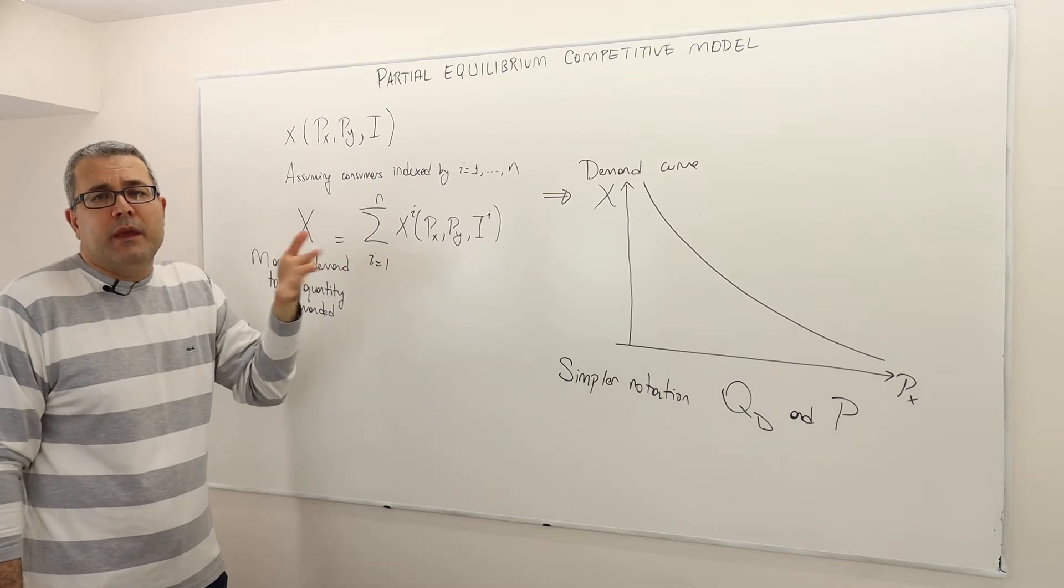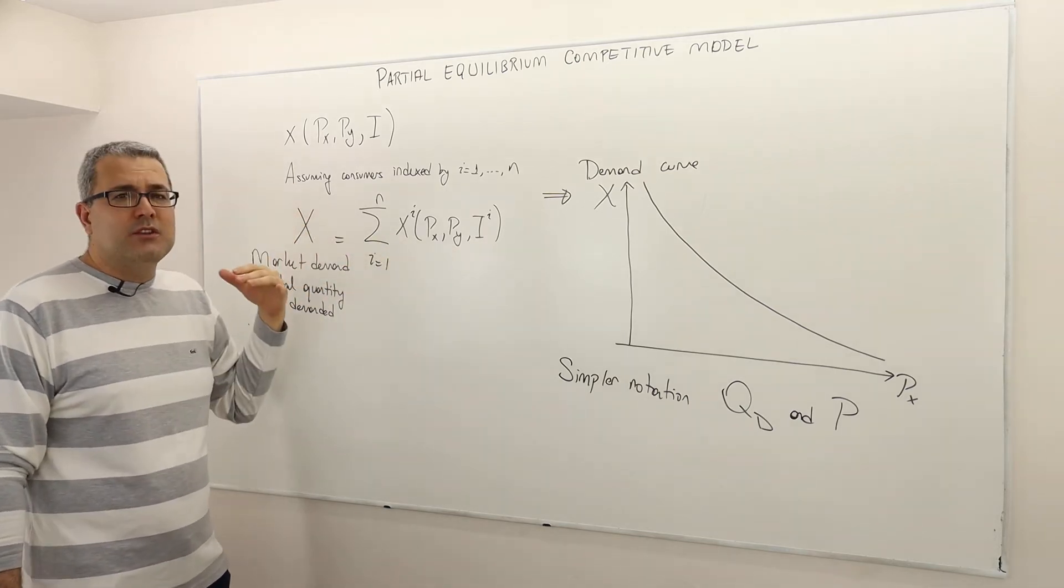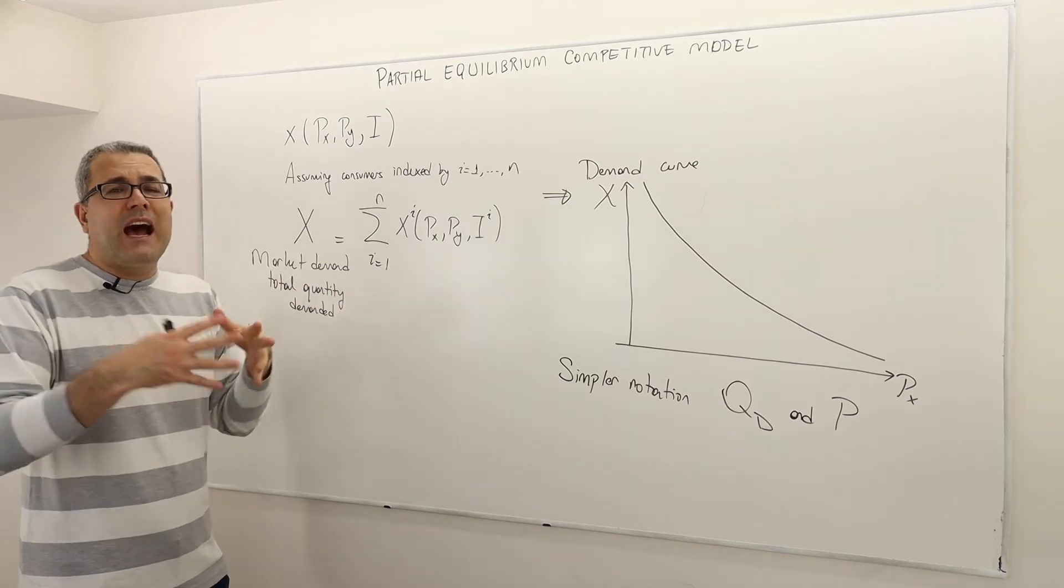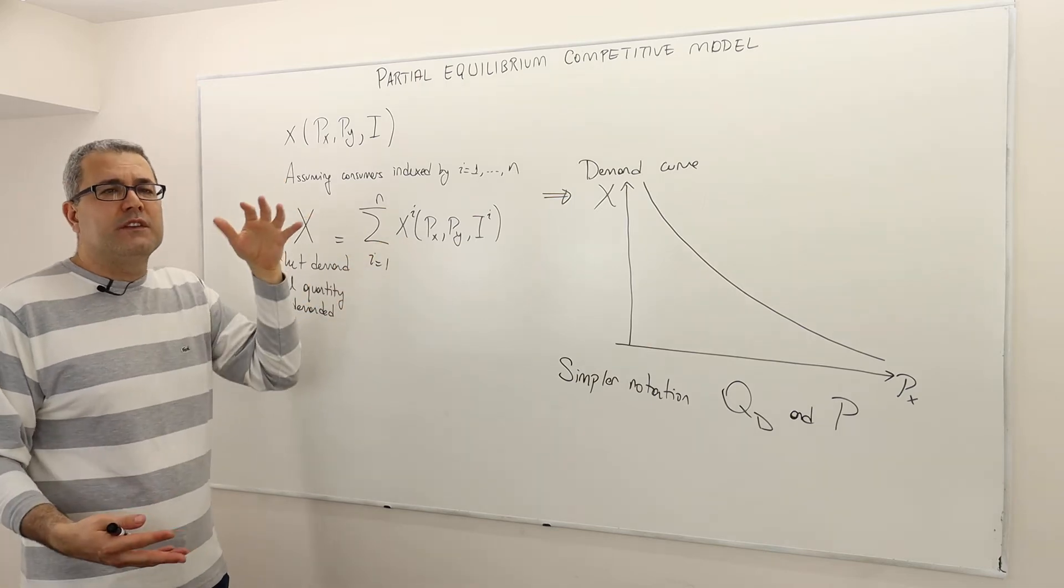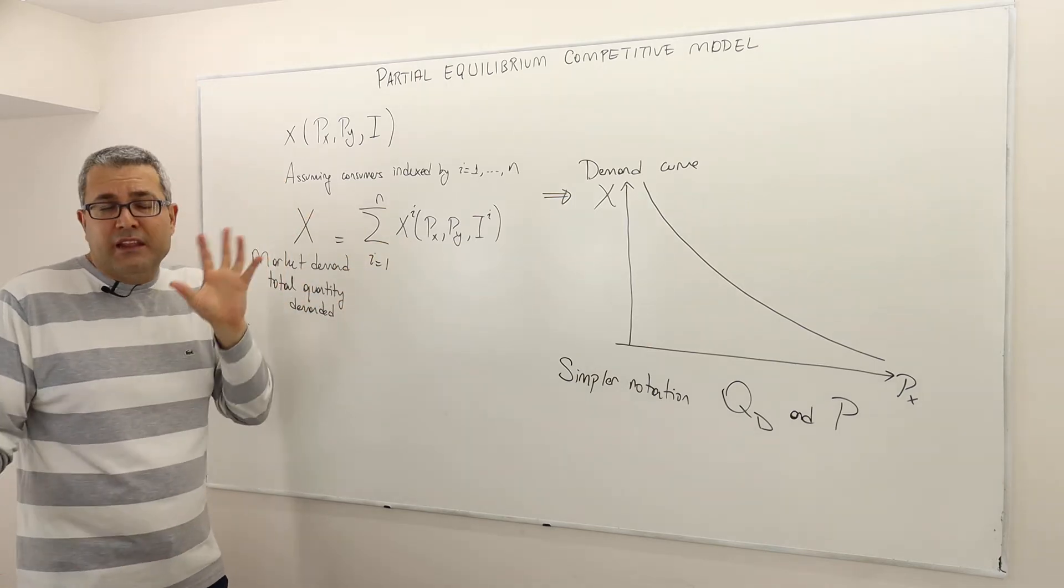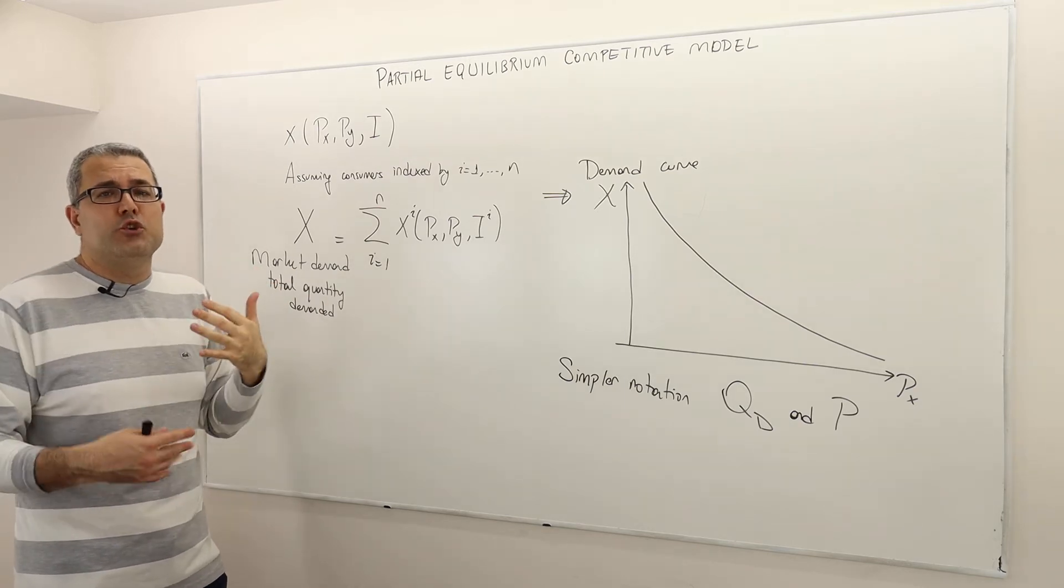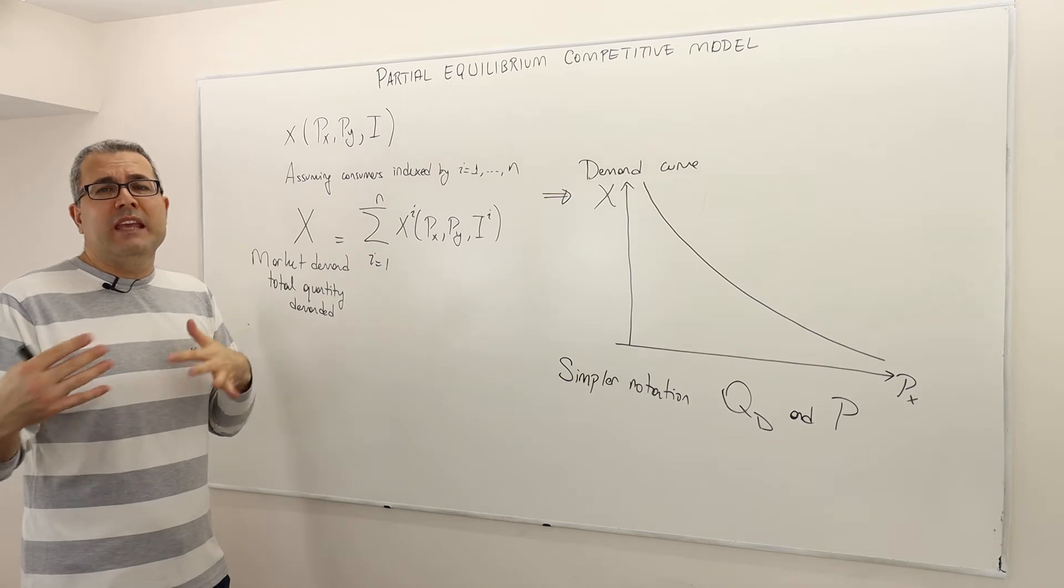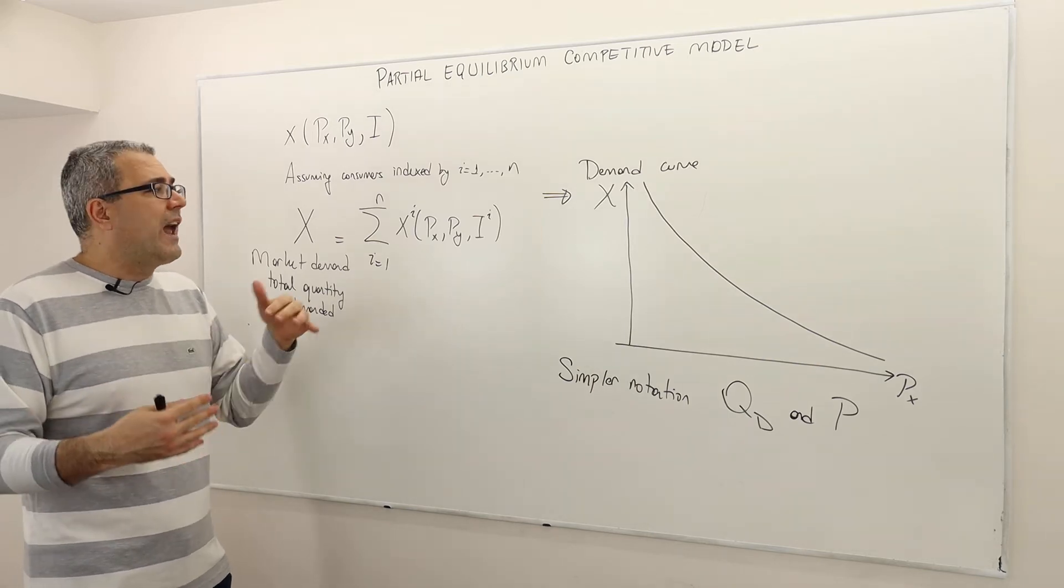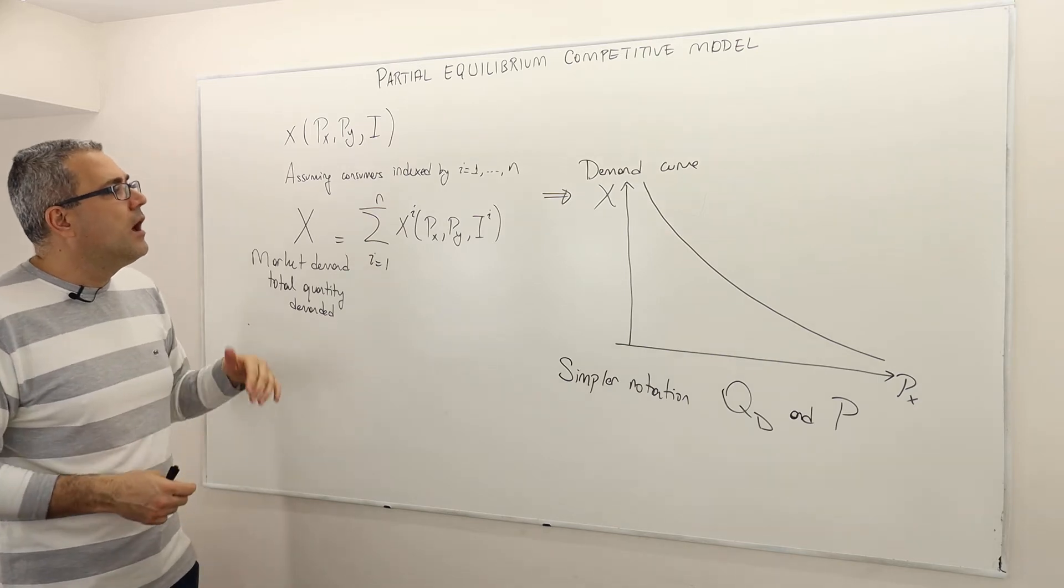Consumers' income may differ. So the market demand depends on the aggregate income, but how it is distributed is also important. Maybe some individual's preferences are different than the others, and so the income effect could be different in some consumers than others. Therefore, the market demand may behave differently depending on how the total income is distributed among the consumers.